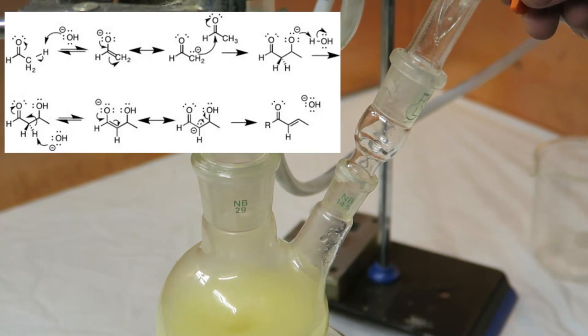A strong base like hydroxide ion can therefore remove one of the hydrogens, forming the carbon anion intermediate. The electrons are again rearranged, forming the reactive enolate ion.